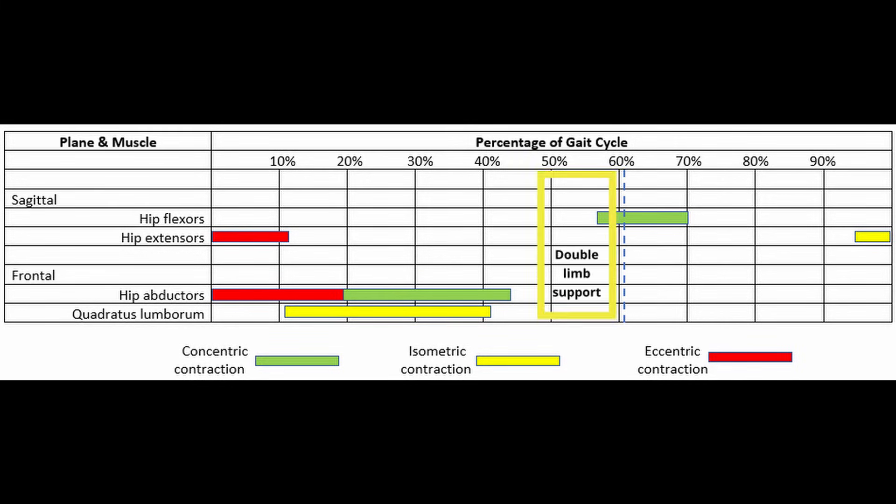The period halfway through the gait cycle is a period of double limb support. Therefore, these muscles are no longer required to help stabilize the pelvis.